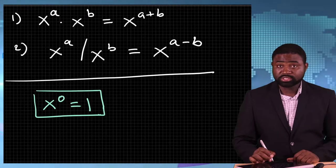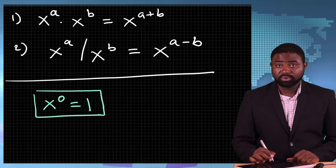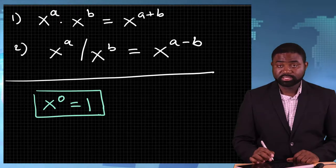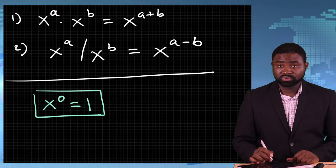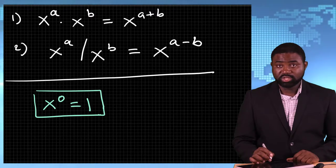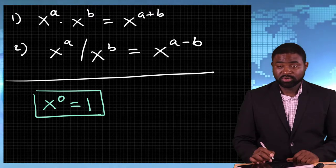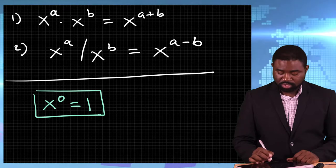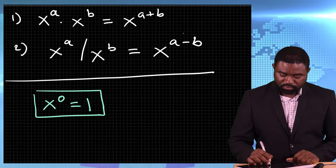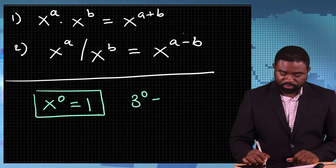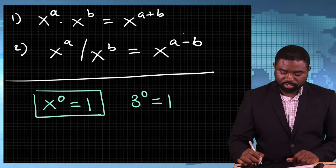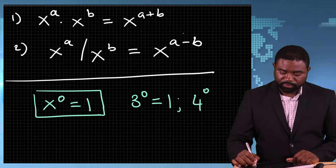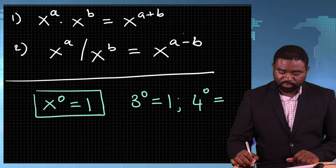In other words, any number raised to the power 0 is equal to 1. So, 3 raised to the power 0 is equal to 1, and 4 raised to the power 0 is equal to 1.